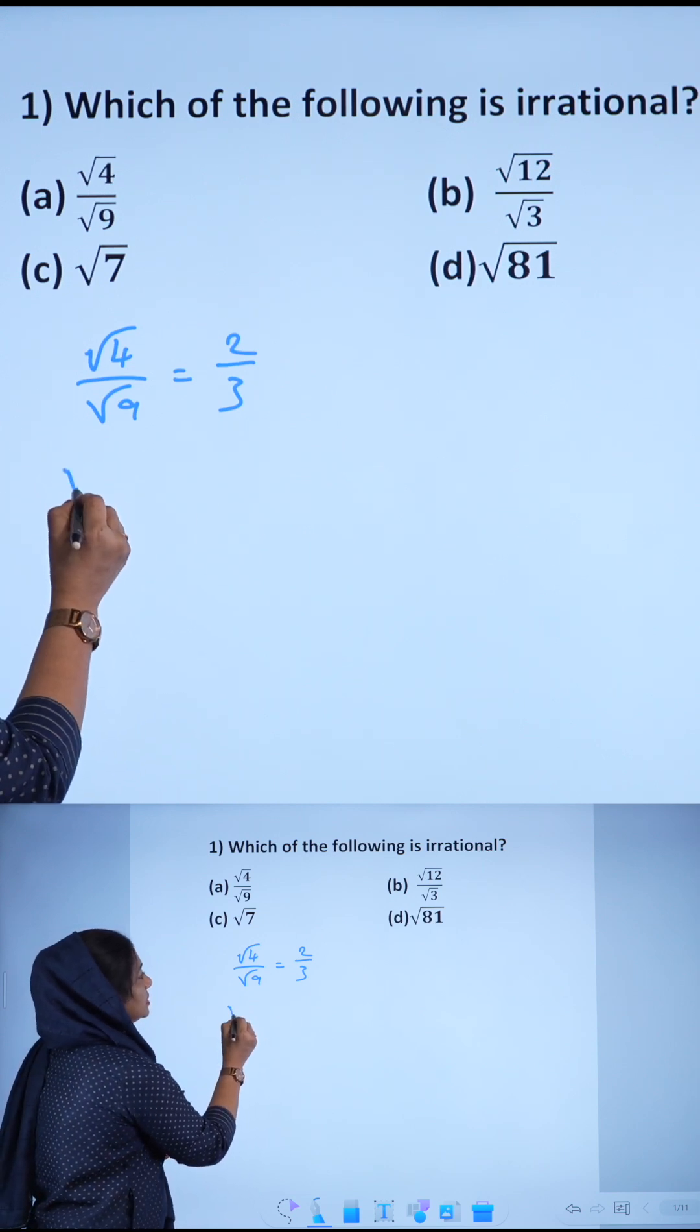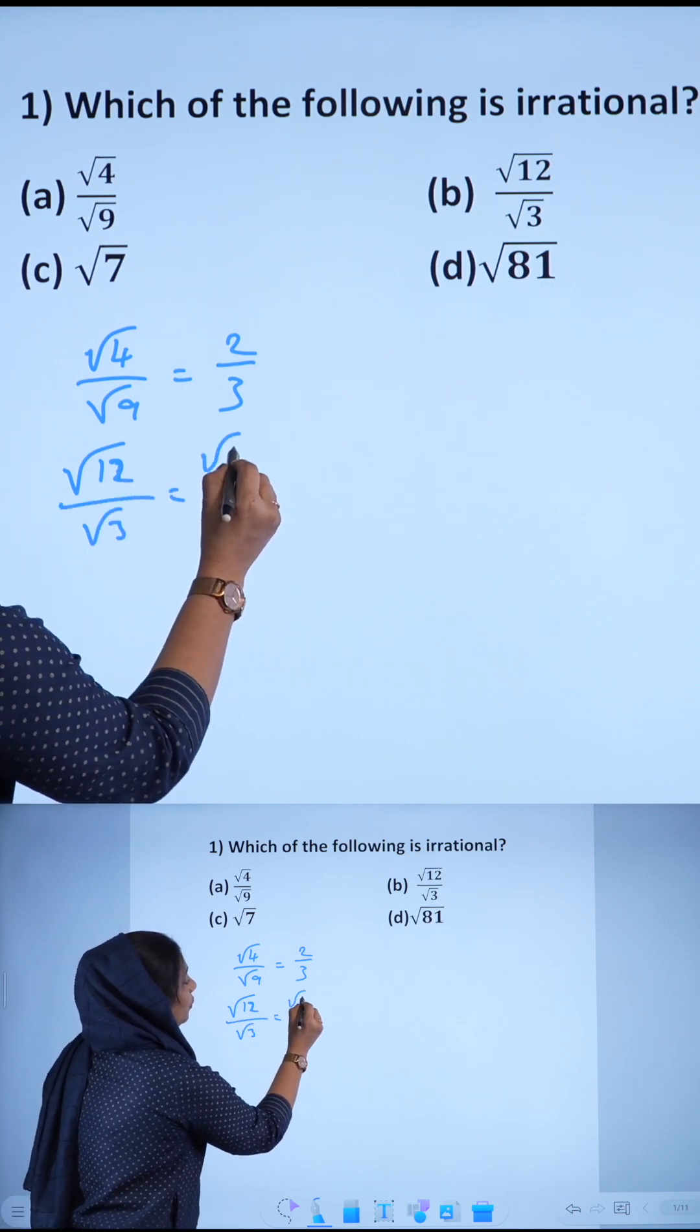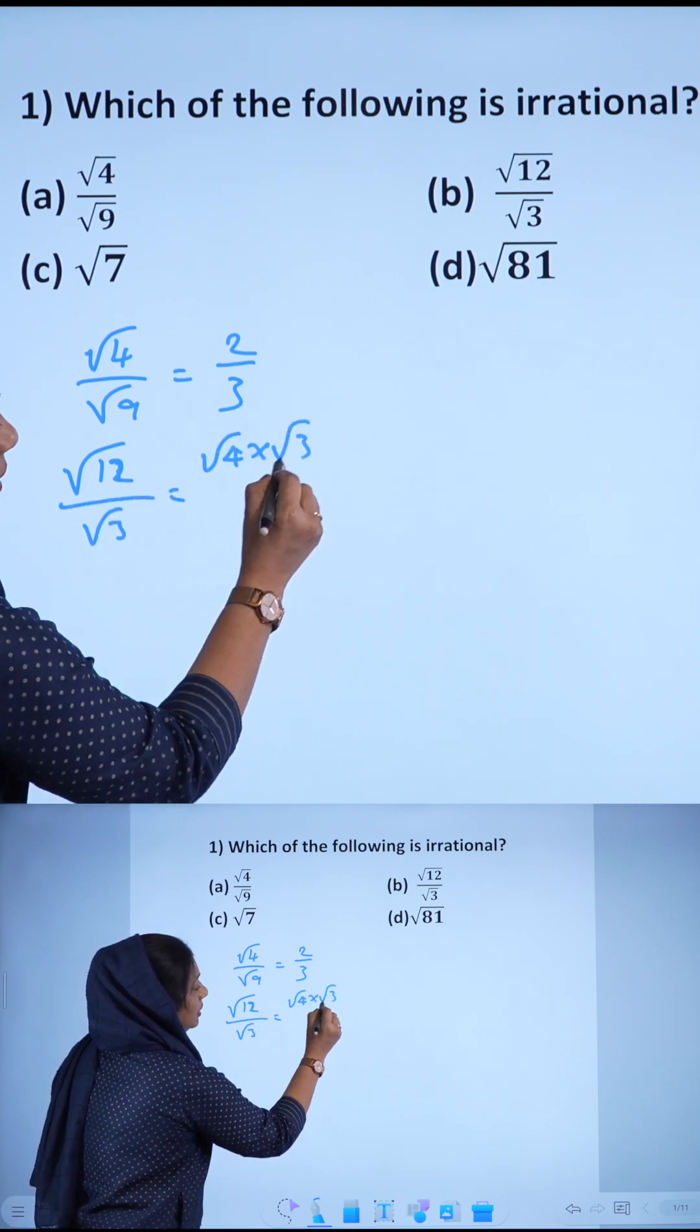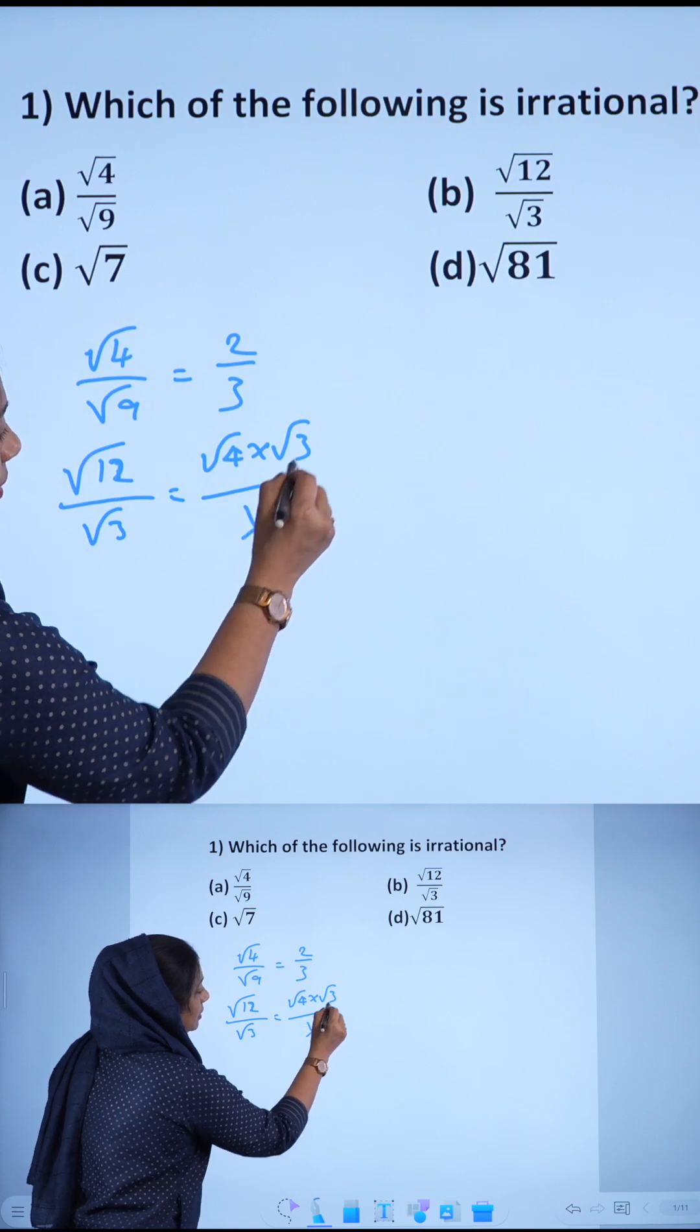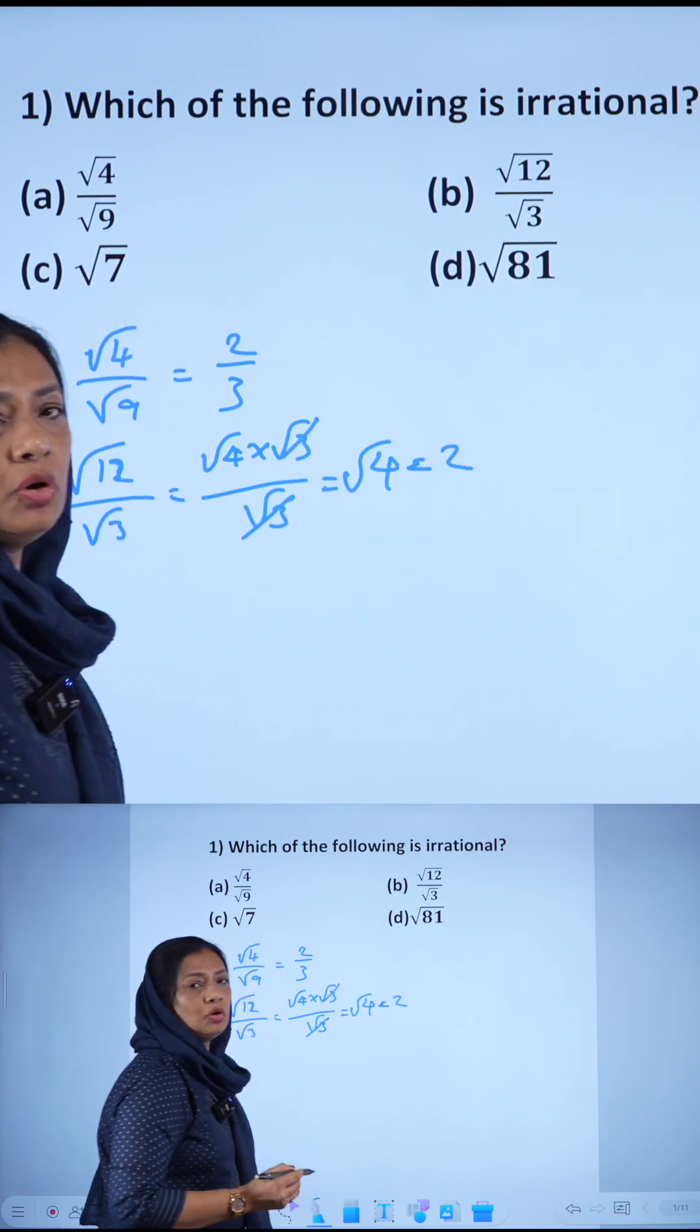Next, root 12 by root 3. That is equal to root 4 times root 3 divided by root 3. So, the answer is root 4, that is equal to 2. That is also rational.